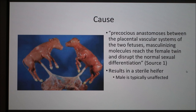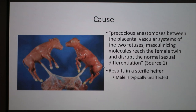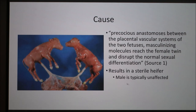It's caused by precocious anastomosis between the placental vascular systems of two fetuses. Precocious anastomosis is when, early in fetal development, there's a connection between certain tissues. As you can see from this picture, these two fetuses share their vascular system, which results in masculinizing molecules reaching the female twin and disrupting normal sexual differentiation. This usually happens by day 40 of the pregnancy, and it results in a sterile heifer while the male is typically unaffected.